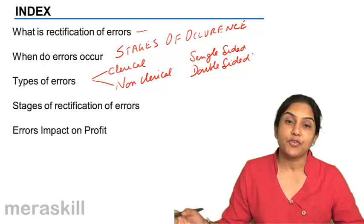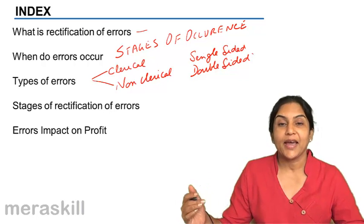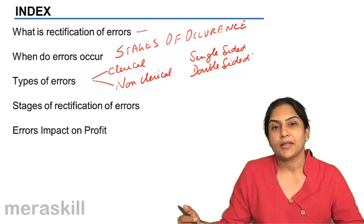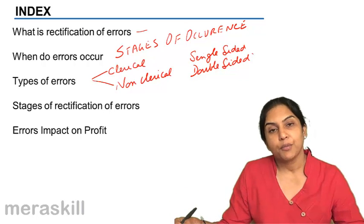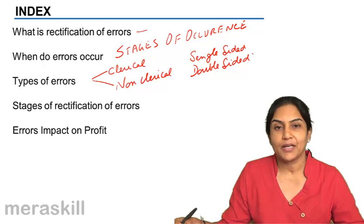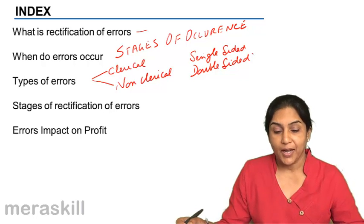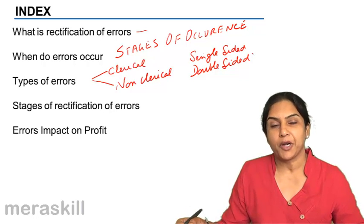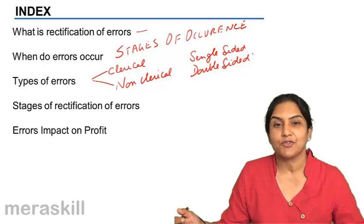Then the stages of rectification of errors. When is the error detected? That is when we rectify the error. If it is detected before we prepare the trial balance, we would have one kind of accounting treatment. If it is discovered after preparation of trial balance, we would have another set of journal entries.